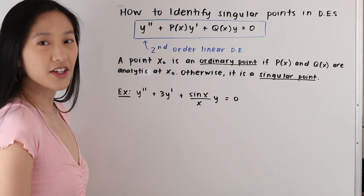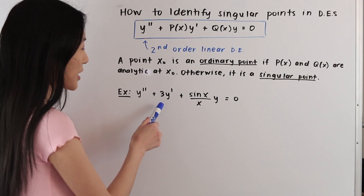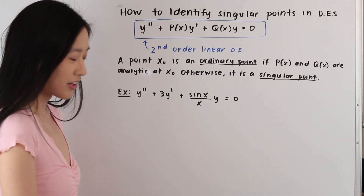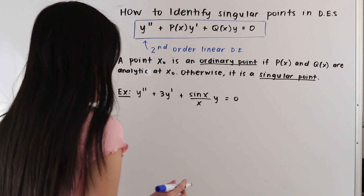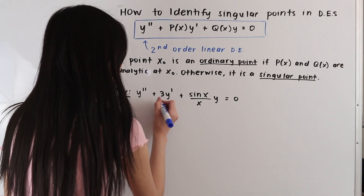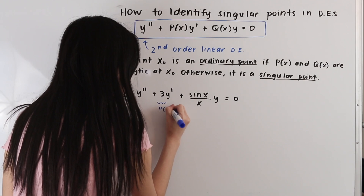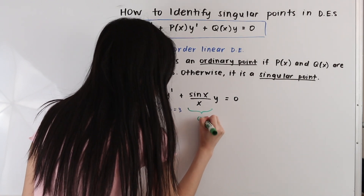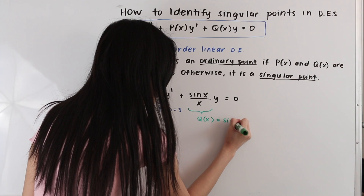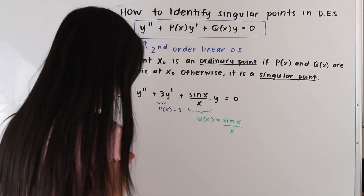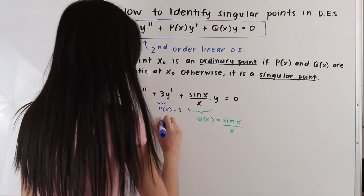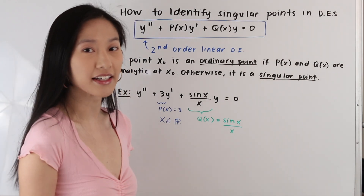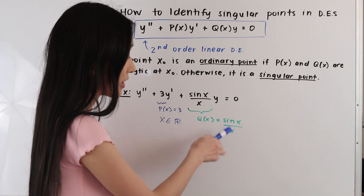Let's take a look at one more example. In this last example, we have y double prime plus 3y prime plus sine of x over x times y is equal to zero. This one is a little tricky. We start by identifying p of x and q of x: p of x is equal to 3 and q of x is equal to sine of x over x. We know p of x is defined for all real numbers. For q of x, it's tempting to say that x equals zero is a singular point because it makes the denominator equal to zero.